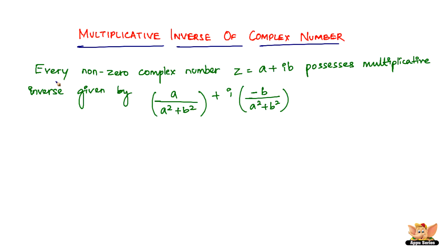It says every non-zero complex number z equals a plus ib has a Multiplicative Inverse given by: a divided by (a squared plus b squared), plus i times (negative b divided by a squared plus b squared). This is how you need to write the Multiplicative Inverse of a Complex Number.